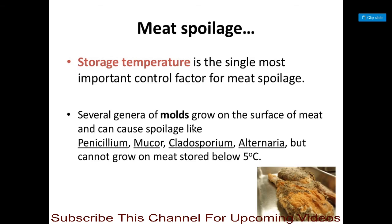Many genera of molds grow on the surface of meat and can cause spoilage. These molds include Penicillium, Mucor, Cladosporium, and Alternaria. However, these molds cannot grow on meat stored below 5°C, which is why storage temperature plays a very important role in preventing meat spoilage.